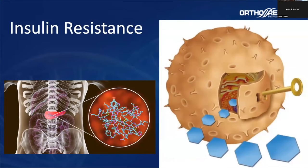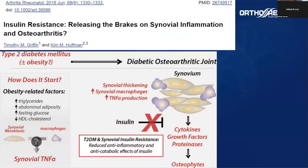Another problem that we sometimes don't pay attention to in our patients is insulin resistance. Insulin is really important to open the cells to glucose and use glucose as our main fuel. If we have insulin resistance, we have problems like fat gain and decreased energy production. But in our joints, we need insulin because it decreases the release of inflammatory cytokines like TNF-alpha. When you have insulin resistance, we increase the production of TNF-alpha, leading to synovial thickening and increased macrophage type 1, causing a vicious circle of inflammation in our joints leading to degeneration.